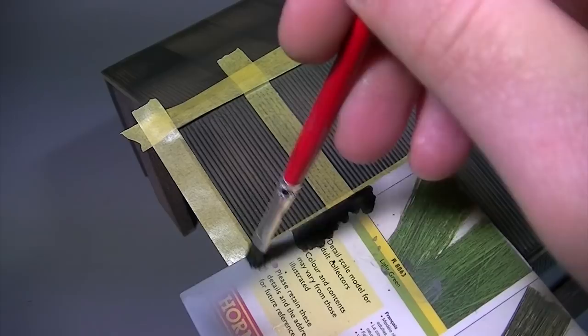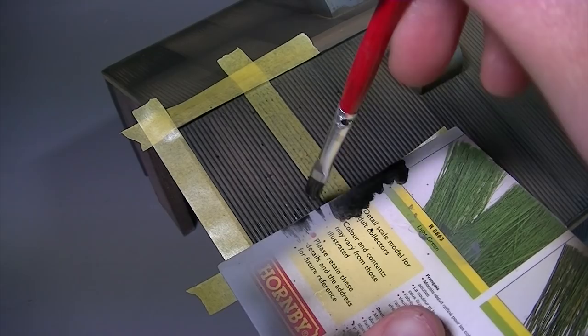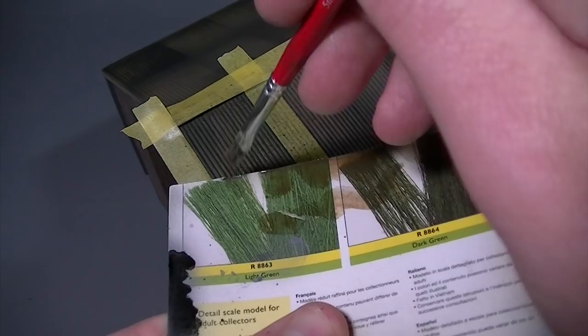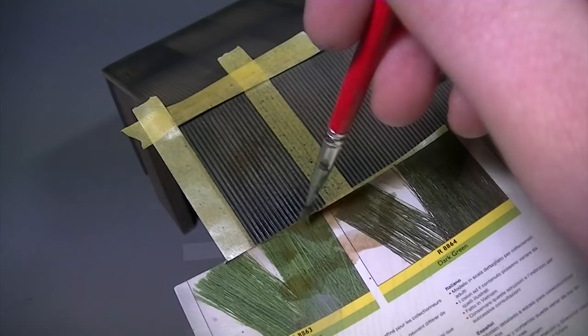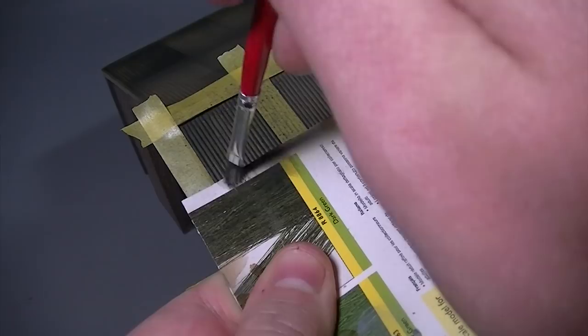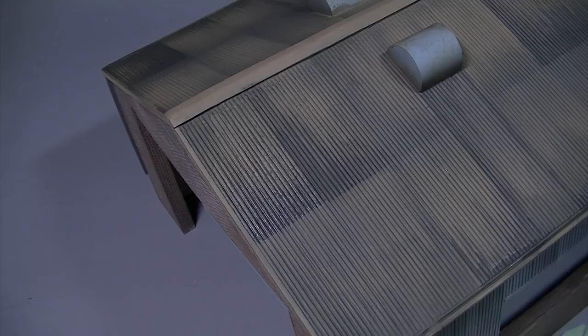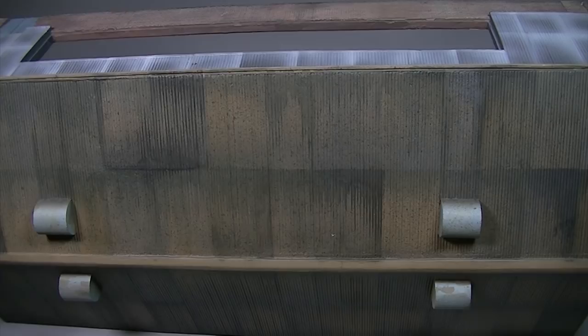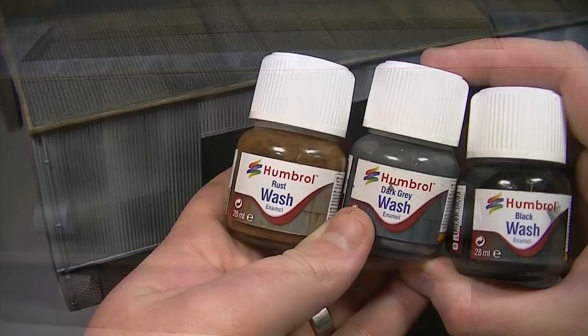To add even more diversity to the finish we can also mask off each individual section and then take advantage of the thin consistency of Humbrol enamel washes to carry out some splattering with different shades of wash. This adds a high degree of texture and helps to break the surface area up even more without overpowering the work that we've already done. If you've ever taken a look at the corrugated roof on a factory or similar industrial building you will have noticed that there's a build up of moss growth and loose stones in the corrugations of the roof and this simple technique gives the visual impression that these details are present.